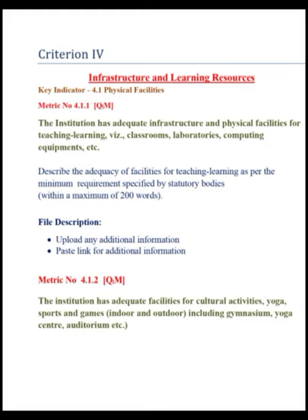In the first key indicator, metric number 4.1.1 is a qualitative metric. In qualitative metrics, we should write a maximum of 200 words. The institution has adequate infrastructure and physical facilities for teaching and learning, namely classrooms, laboratories, computers, computing equipment, etc.